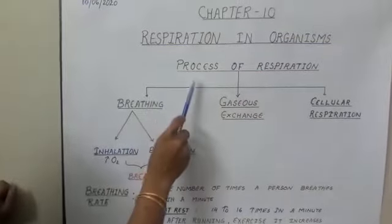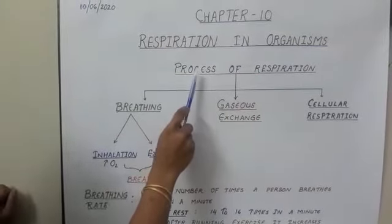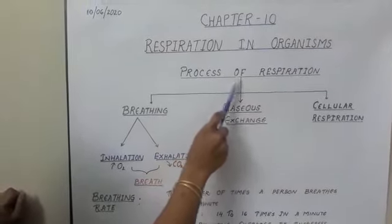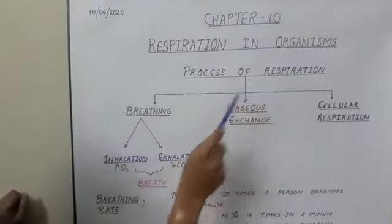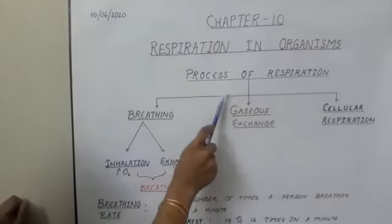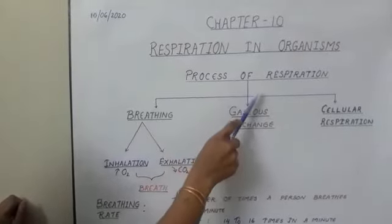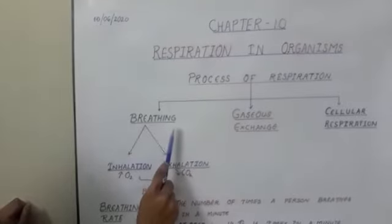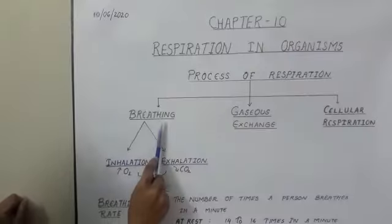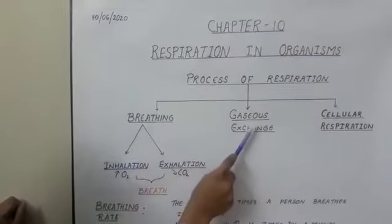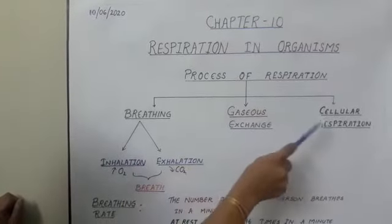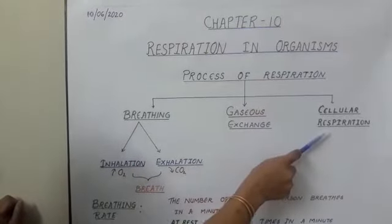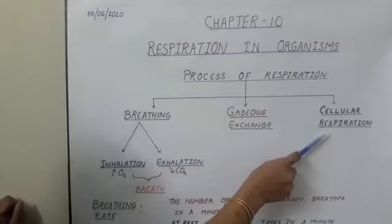Firstly, in this chapter, I will explain the process of respiration. In this process of respiration, there are three steps: breathing, gaseous exchange, and cellular respiration.